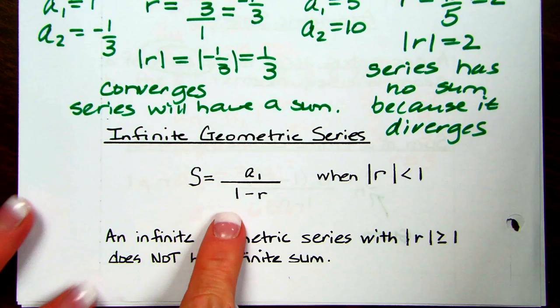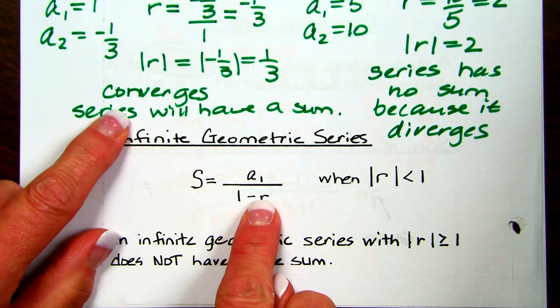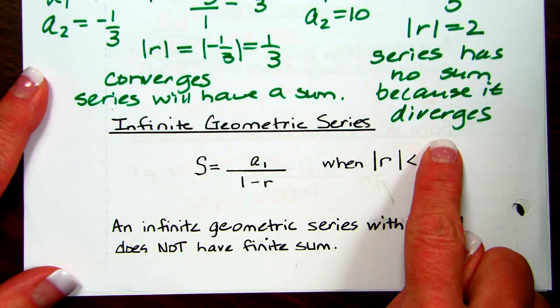The formula for an infinite geometric series is S equals the first term divided by (1 minus R). So you take the first term and divide by 1 minus R. If you do have one that converges, this is the formula you would use to find the sum. Remember, the absolute value of R has to be less than 1 — if it's greater than or equal to 1, it does not have a finite sum because it diverges.